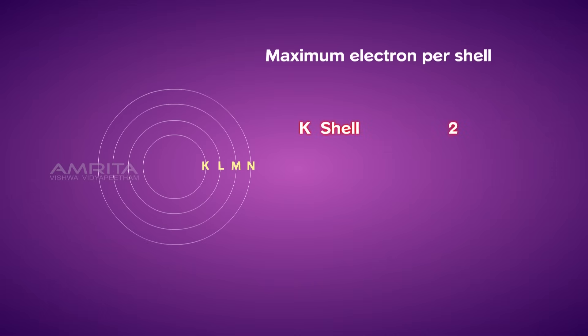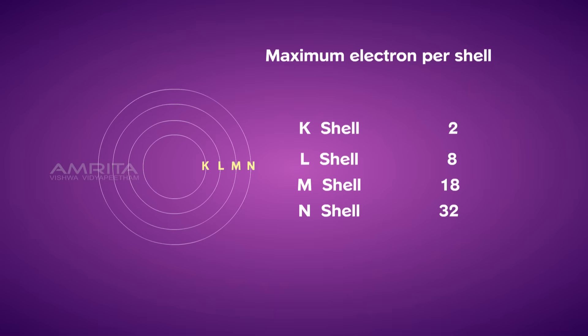Thus the K shell would have 2 electrons, the L shell would have 8 electrons, the M shell would have 18 electrons, and the N shell would have 32 electrons, and so on.